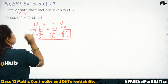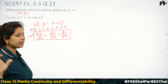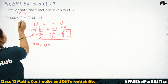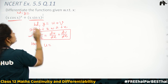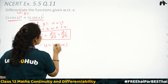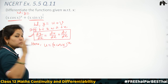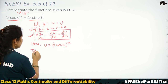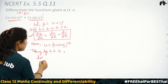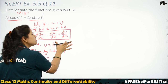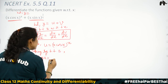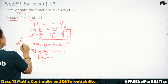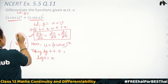Taking log of both sides: log u = log of x·cos(x) to the power x. Since this is log(a^b) form, which equals b·log(a), we get log u = x·log(x·cos x). Now we have to differentiate both sides with respect to x. This gives 1/u · du/dx. Now the right side is in product rule (u·v) format, so we apply the product rule.